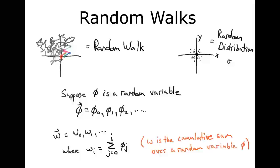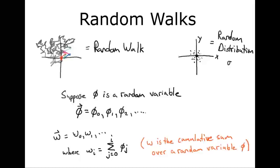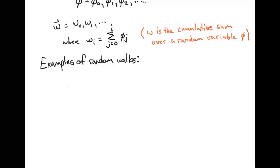Now why do we care about random walks? It turns out they show up in a lot of different cases. What are some examples of random walks?